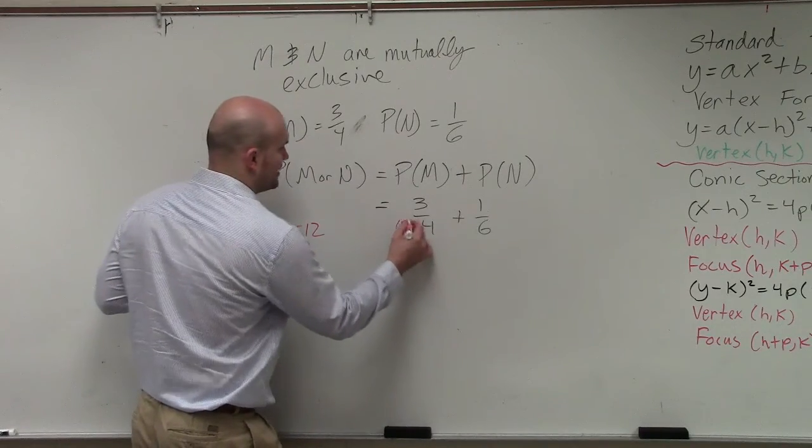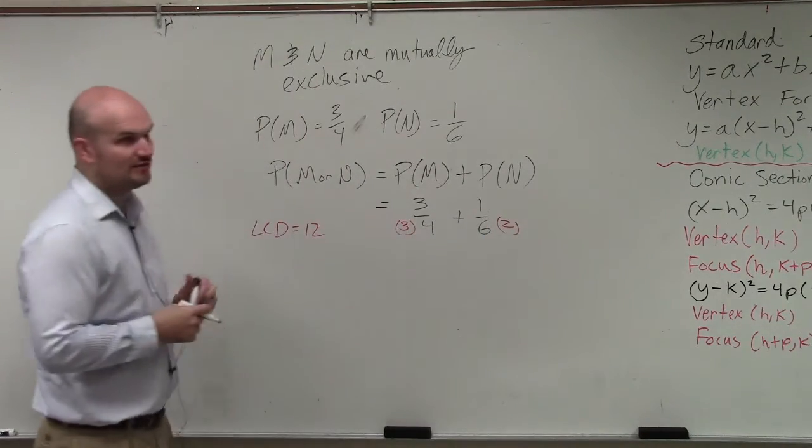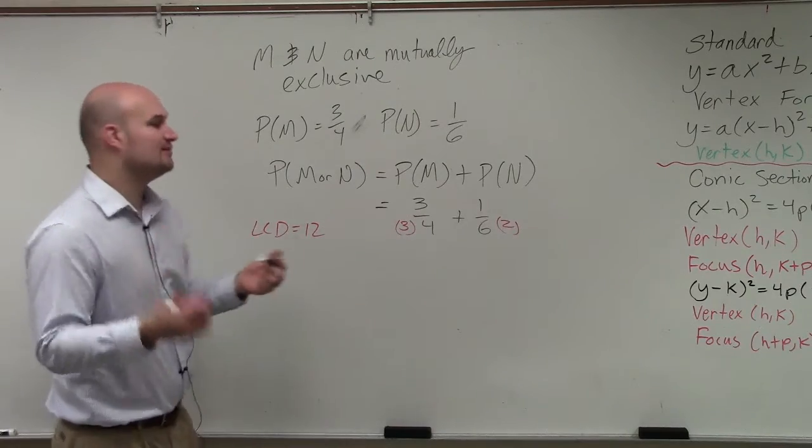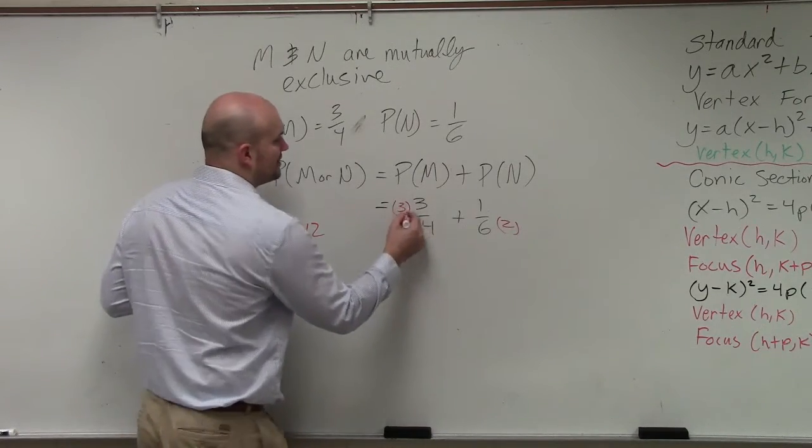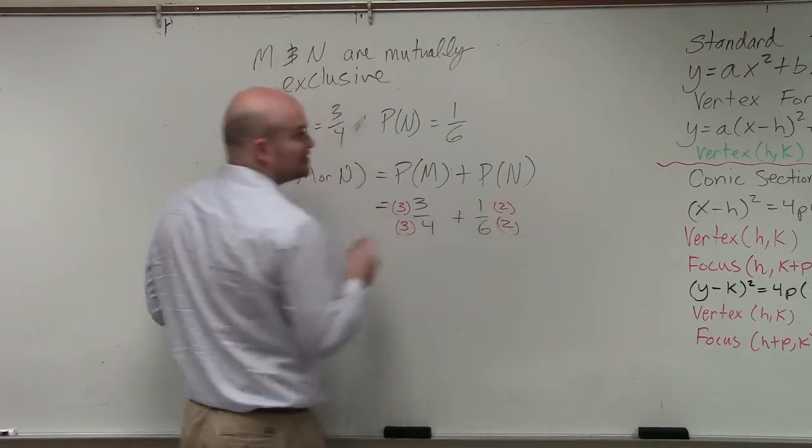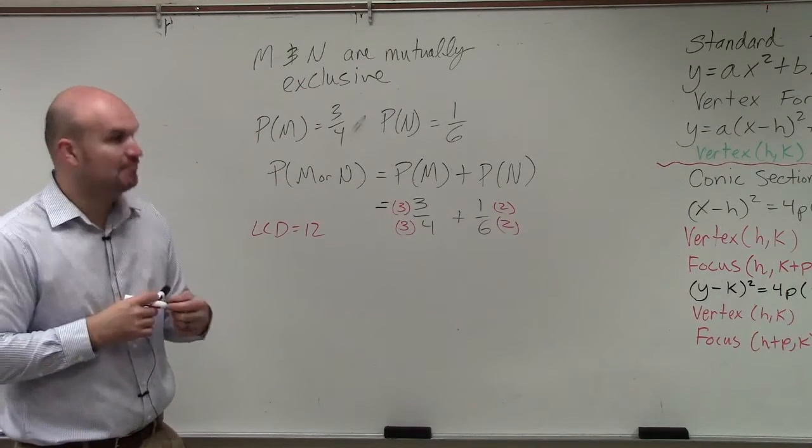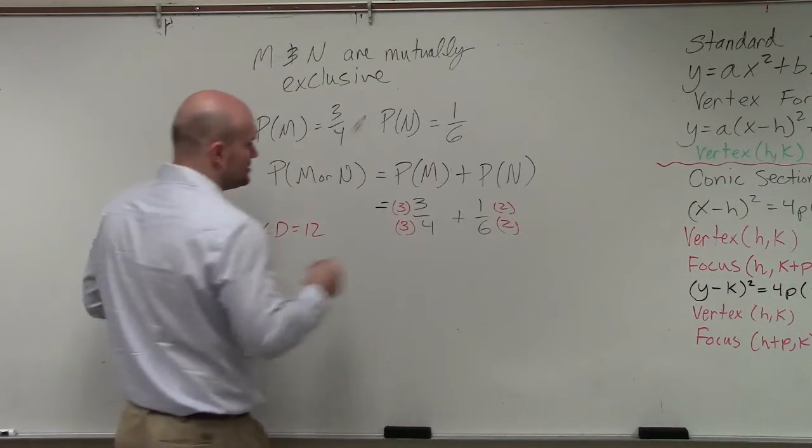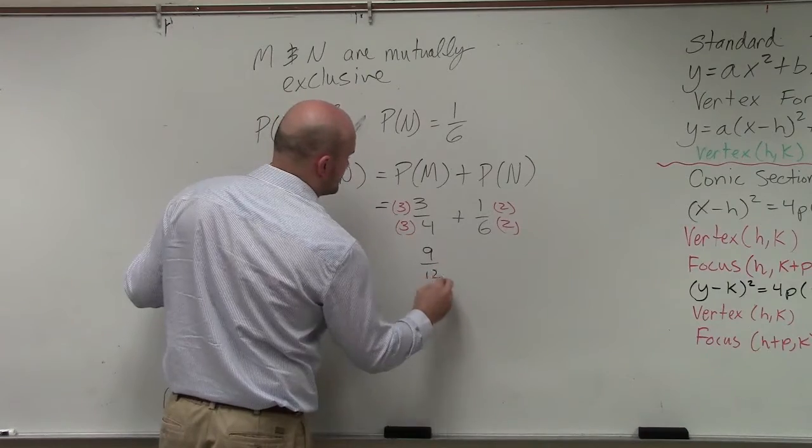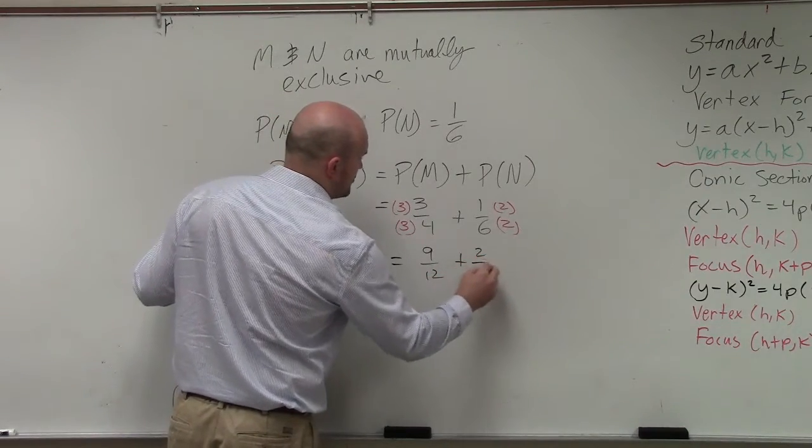So here would be 3, and here would be 2. However, when multiplying fractions to keep equivalent fractions, you have to multiply by the same number on the top and the bottom because we don't want to change the fraction. We just want to get a multiple of the fraction. So therefore, we obtain 9/12 plus 2/12.